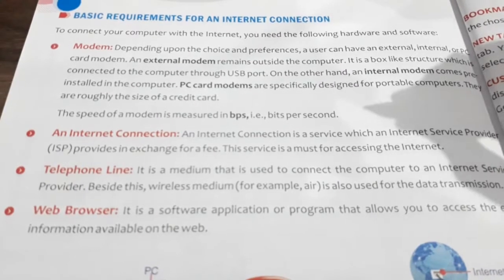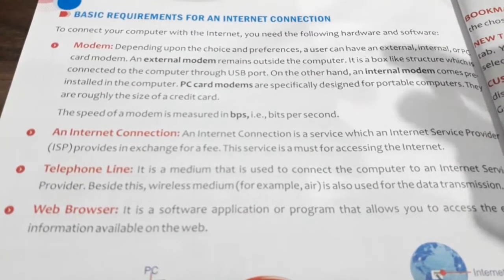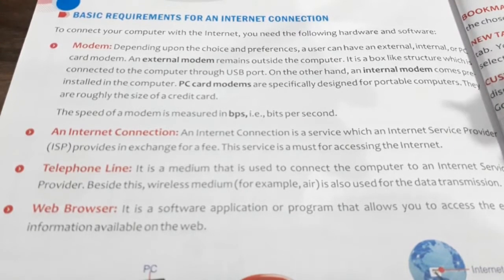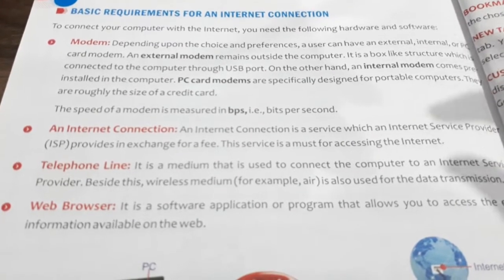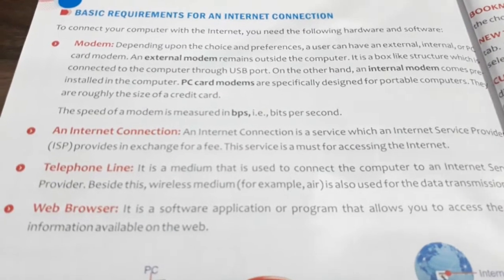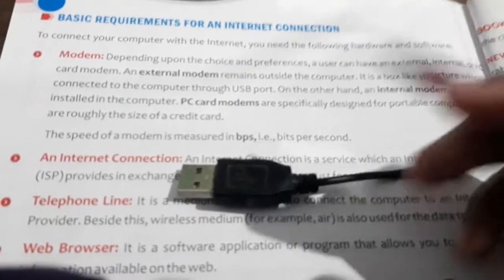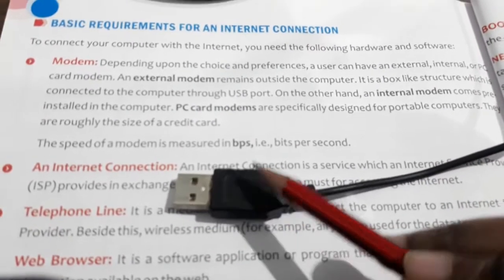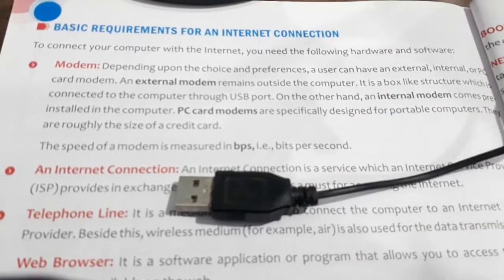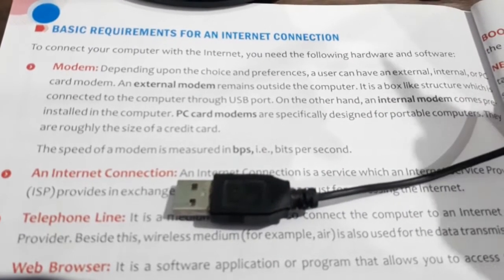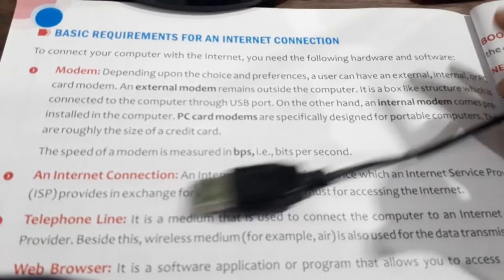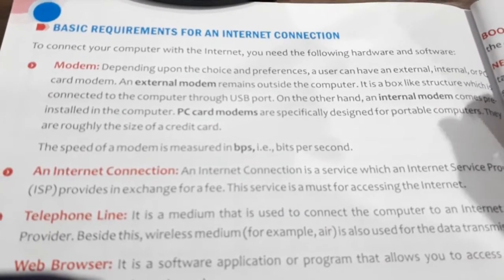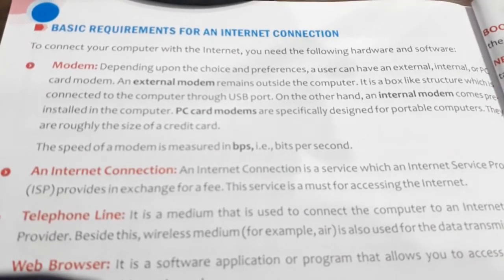An external modem remains outside the computer — it looks like a box structure and remains outside the computer system. You can get the internet connection through it with the help of your USB port. Next is your internal modem, which comes pre-installed in the computer — it is already present in your computer system.